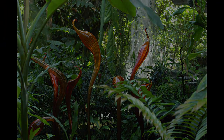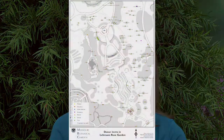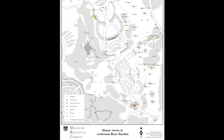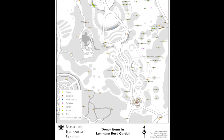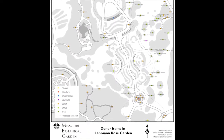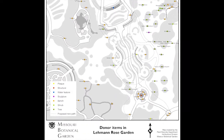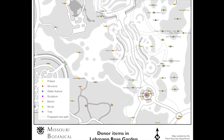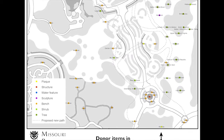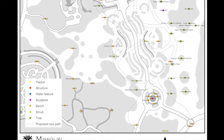For the public, we have a web mapping application they can access where they can search for a plant by common name, by scientific name, or by donor — because a lot of people purchase a tree or a plant for their loved ones and often come to the garden wanting to see that plant. They can create a map and print that out for themselves.